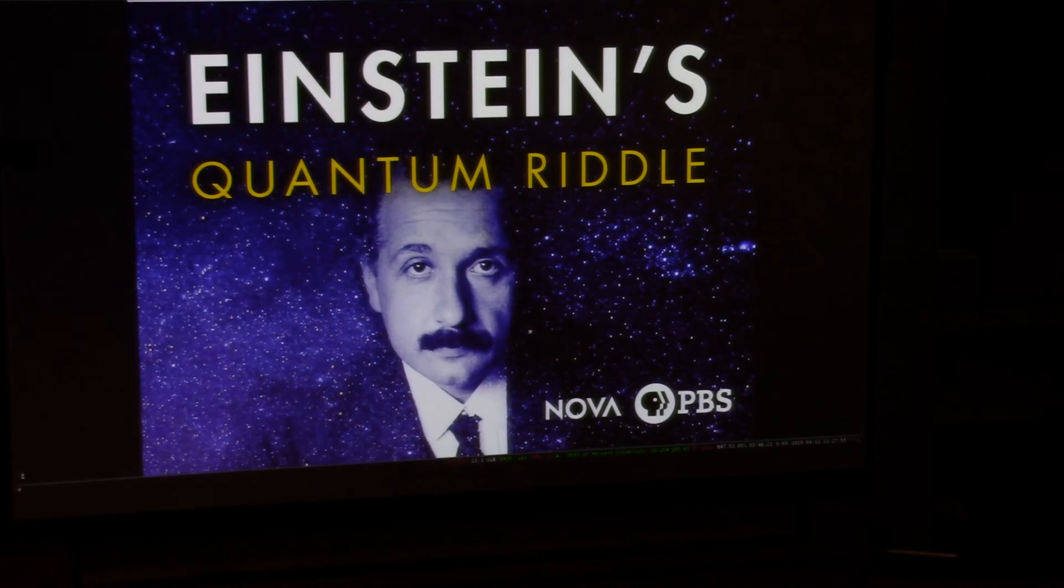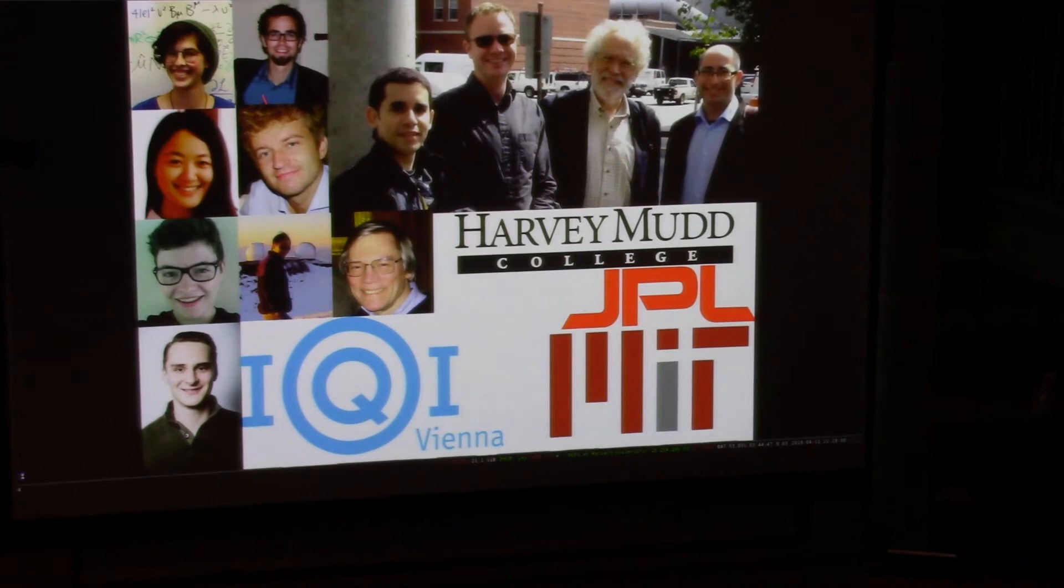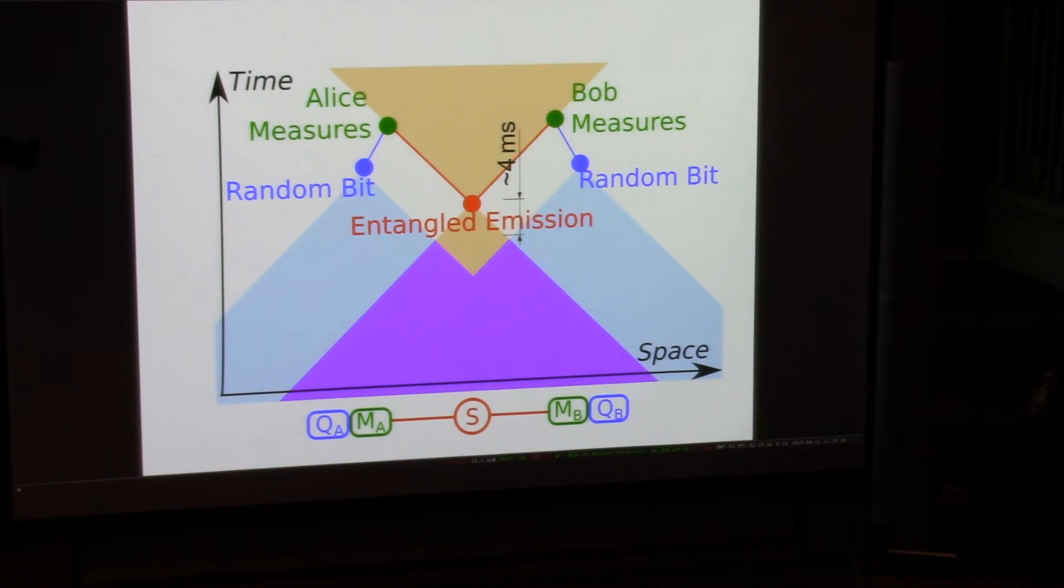But when you look at it on that space-time diagram, remember, I showed those purple regions intersecting just four milliseconds before you started the experiment. A priori, it seems like a reasonable assumption, but if you just look at how the space-time geometry works out, it'd be really nice to remove that assumption, that there's any sort of causal contact between your lab on earth and how you flip the quarters between the depths of the cosmos.